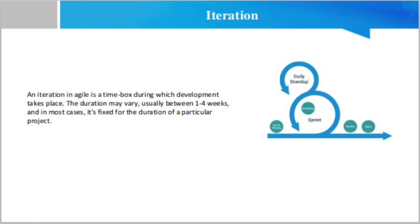First, we shall discuss about iteration. Iteration in agile is a time box during which development takes place. The duration may vary, usually between one to four weeks, and in most cases it is fixed for the duration of a particular project. A crucial aspect of the agile approach is the underlying assumption that a project is exclusively made of a sequence of iterations, except for a very brief planning and vision phase before development takes place.